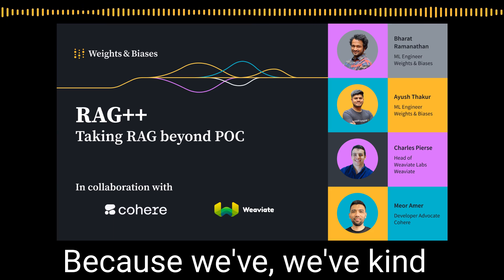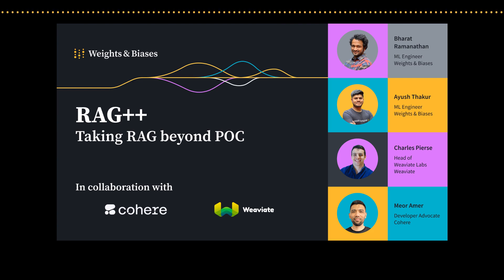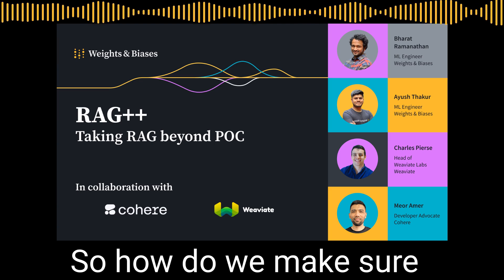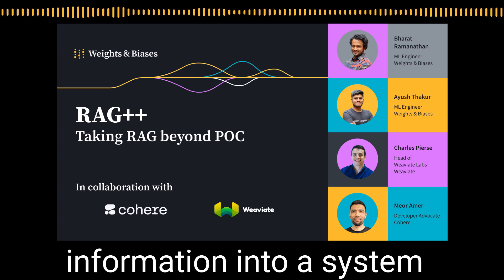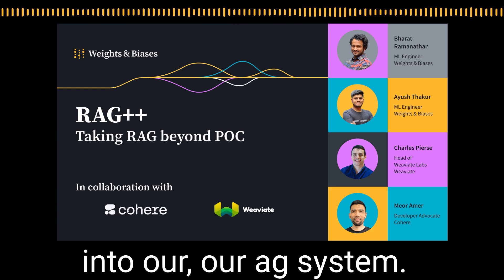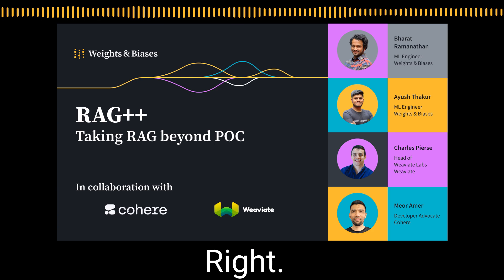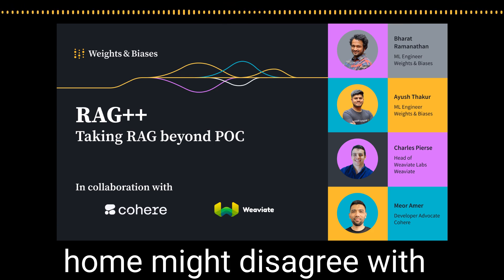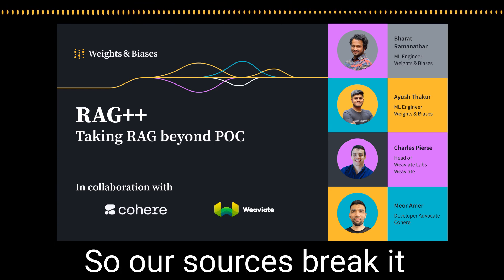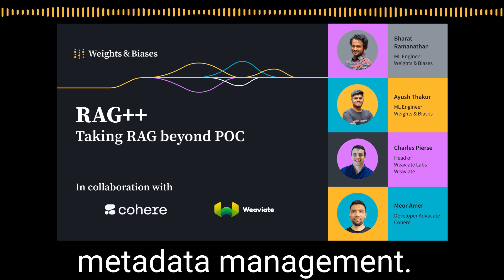Let's get into the nitty-gritty of data ingestion. It's more exciting than it sounds. It's about not just randomly dumping data into our RAG system — we have to be strategic. Think of it like building a library: we don't just take books and throw them on shelves, there's a system and a method to the madness. Our sources break it down into three main steps: data parsing, chunking, and metadata management.